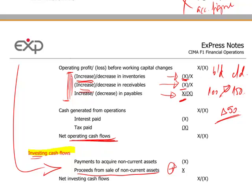After cash from operations, interest paid and tax paid are presented separately — you're looking for the portions actually paid, not the liabilities. In the exam you may need incomplete record calculations to determine these. Once you deduct interest paid and tax paid, you arrive at the net cash from operations. This is the most sophisticated section of the cash flow statement — if you understand the mechanics of converting an accounting profit figure to an operating cash flow figure through these adjustments, you'll be strong on this highly examinable topic.